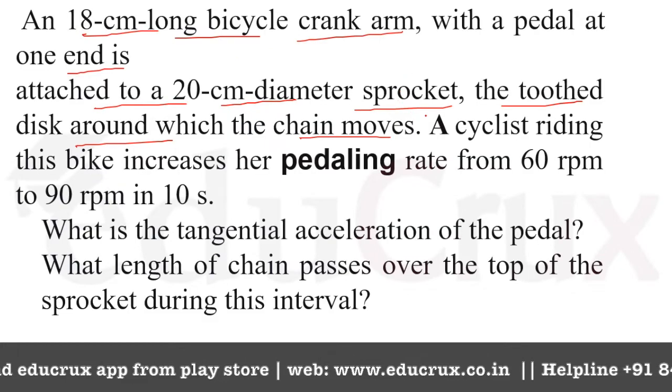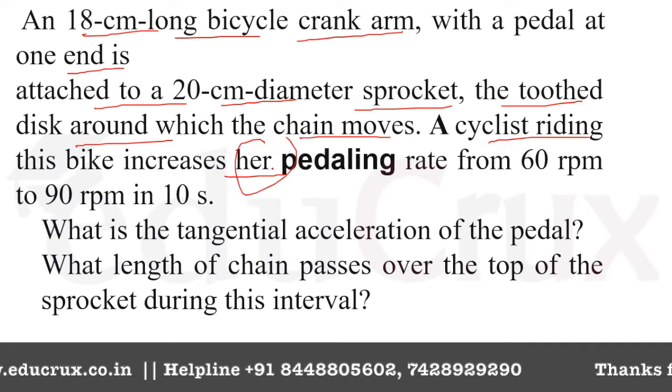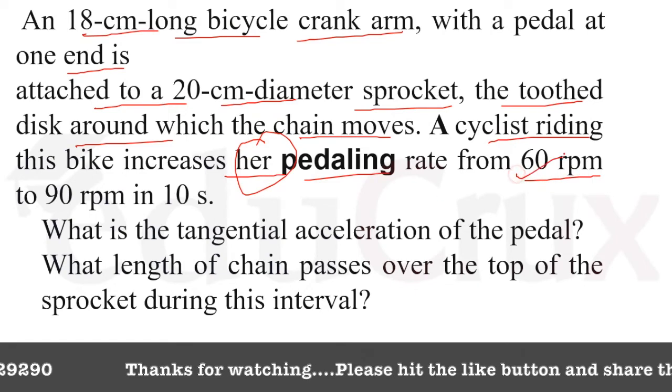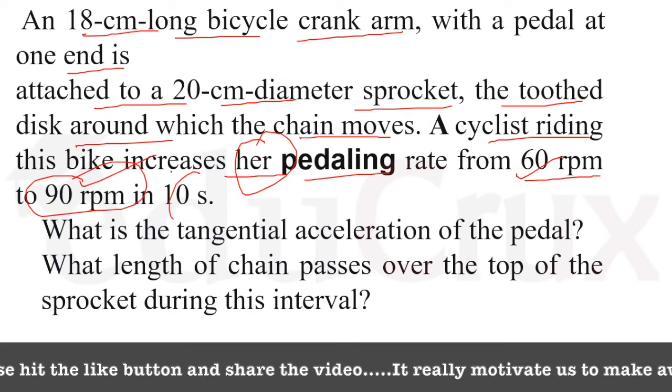What we are given in the question is that a cyclist riding the bike increases her angular velocity. She is pedaling and initial angular velocity in which she was pedaling was 60 rotations per minute and finally it was 90 rotations per minute in 10 seconds.